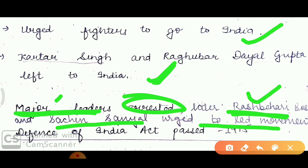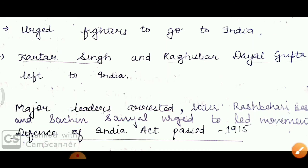The major leaders were arrested under the Defense of India Act, which was passed in 1915. The mutiny was arrested and crushed before it could fully take shape, and in that form, the mutiny was stopped.